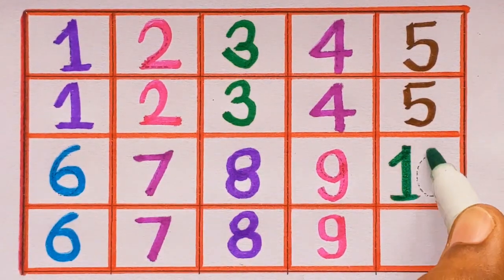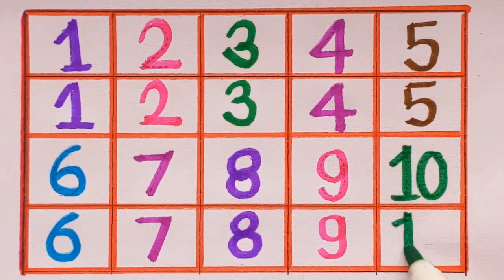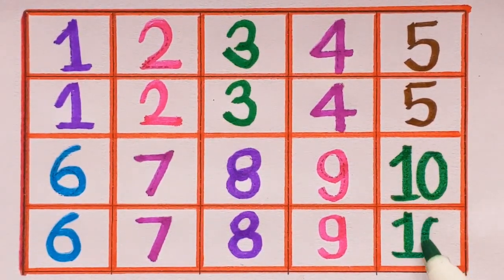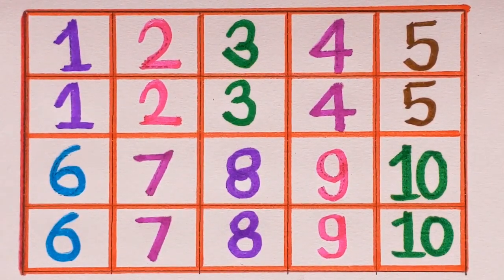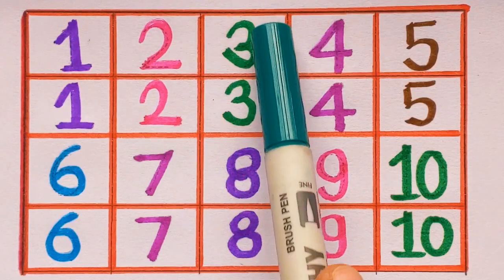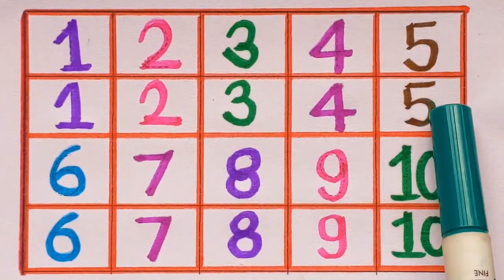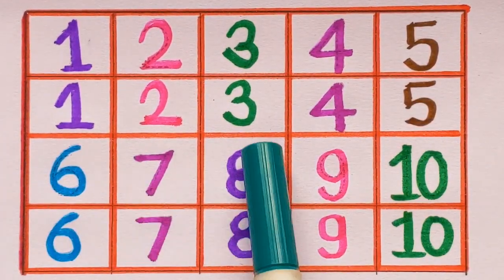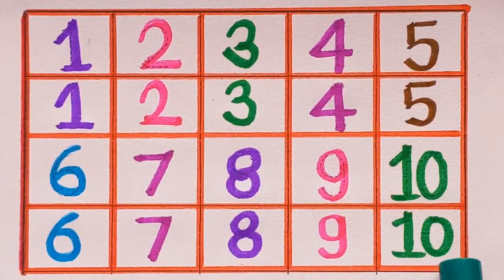And the next number is 10 with the green color. Now let's revise with me: 1, 2, 3, 4, 5, 6, 7, 8, 9, and 10.